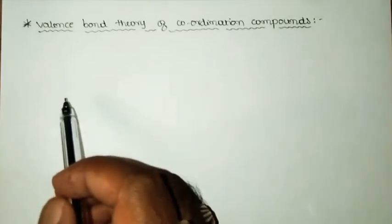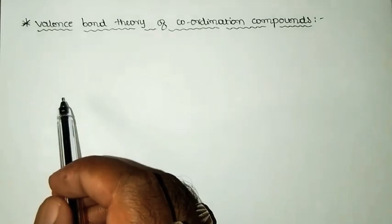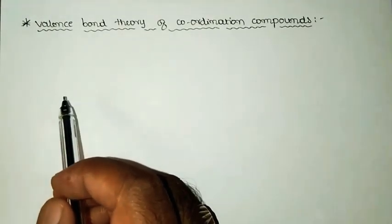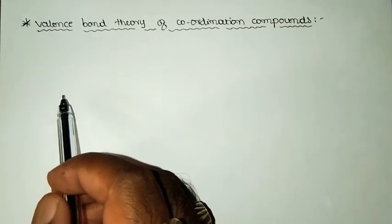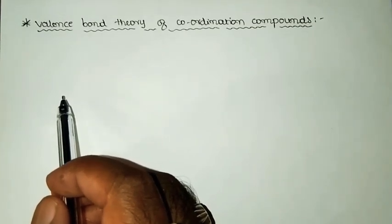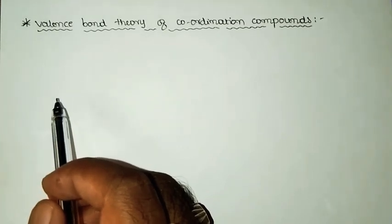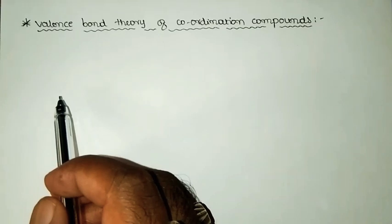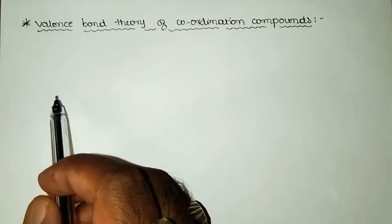Hi everyone, welcome back to the channel. This is a continuation of classes on the topic of coordination chemistry. In this video we shall learn about the advanced theory proposed to explain the formation of a coordinate bond between the central metal atom or ion and the surrounding ligands.